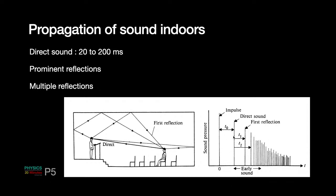When the source continues, sound energy grows — sound pressure level will increase. When the person stops talking, the sound energy will drop because it gets absorbed on every reflection. This graph shows how an impulsive sound decays: the first impulse reaches the listener, then the first reflection, then subsequent multiple reflections. Remember, each reflection will hit a surface and get absorbed a little bit, depending on what materials are used on the wall and floor, so the level slowly drops down.